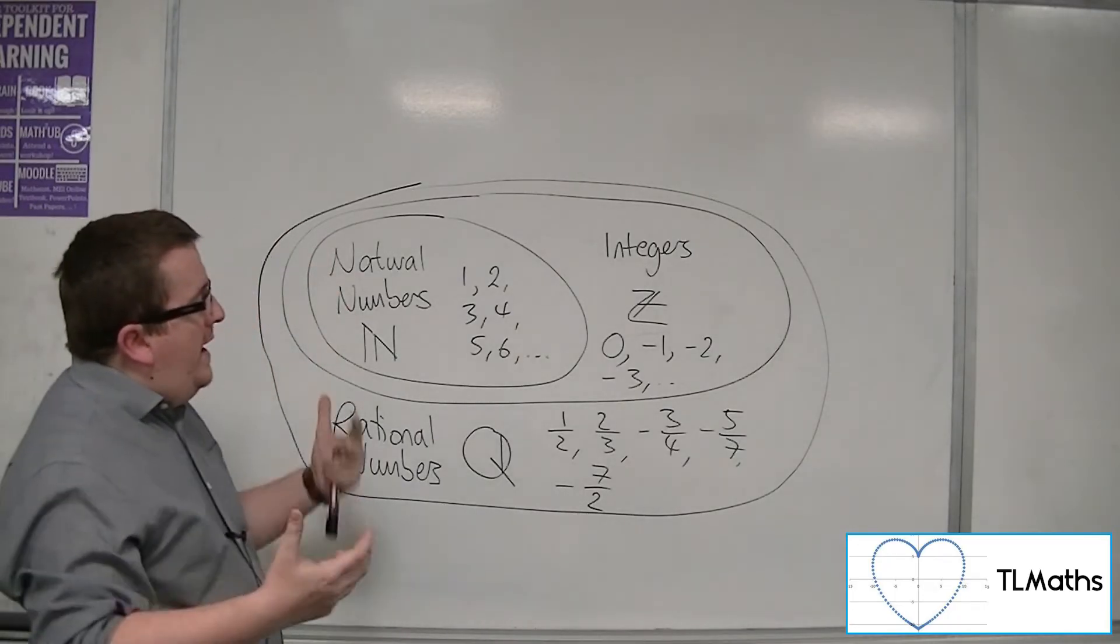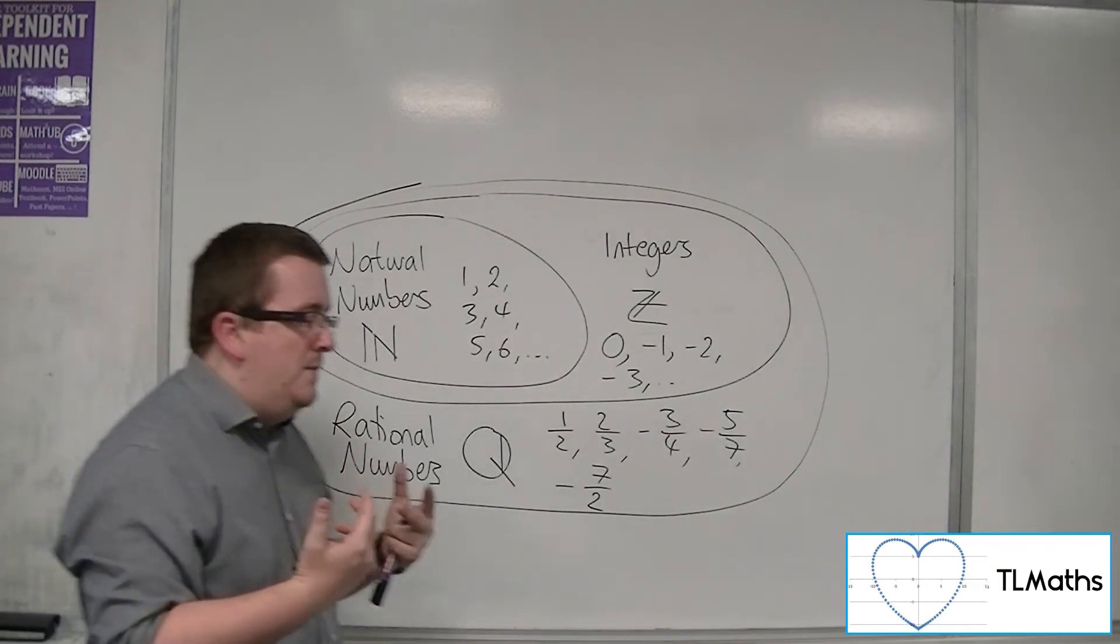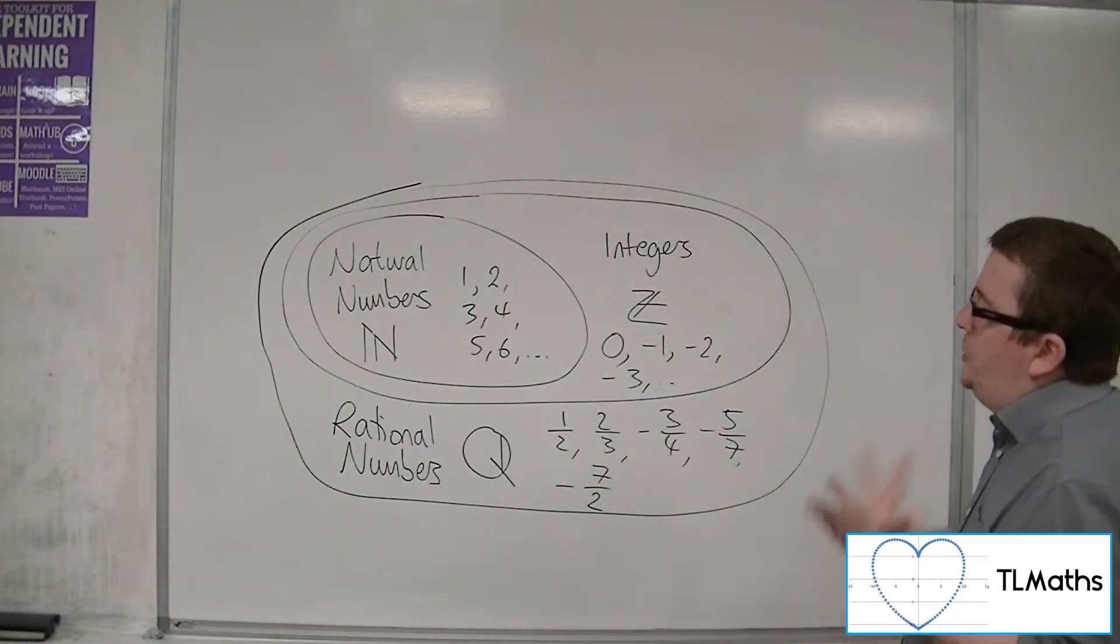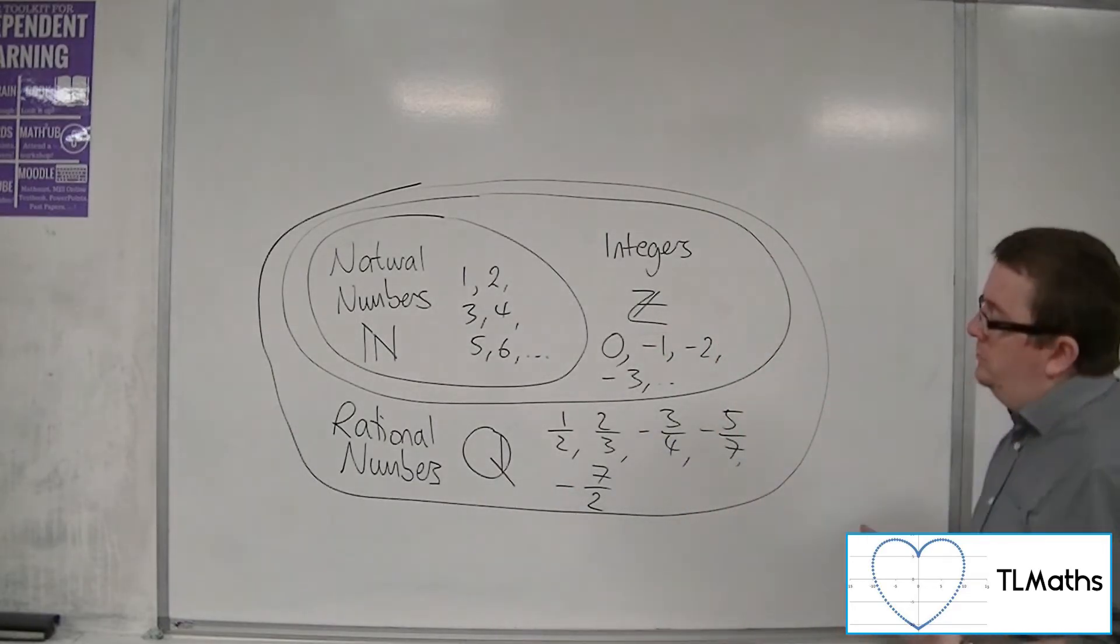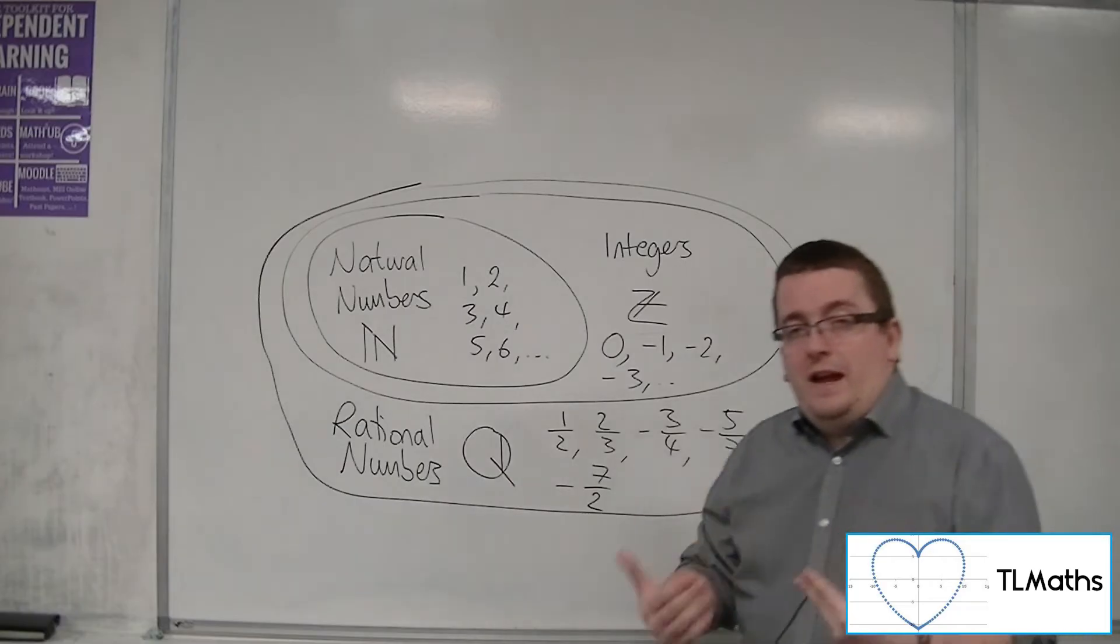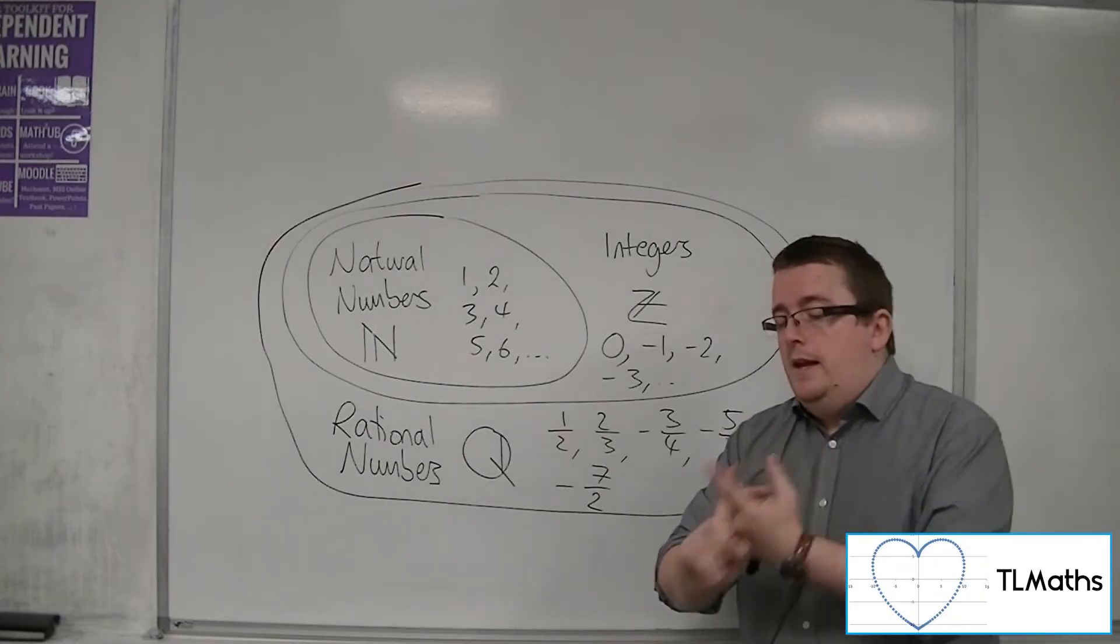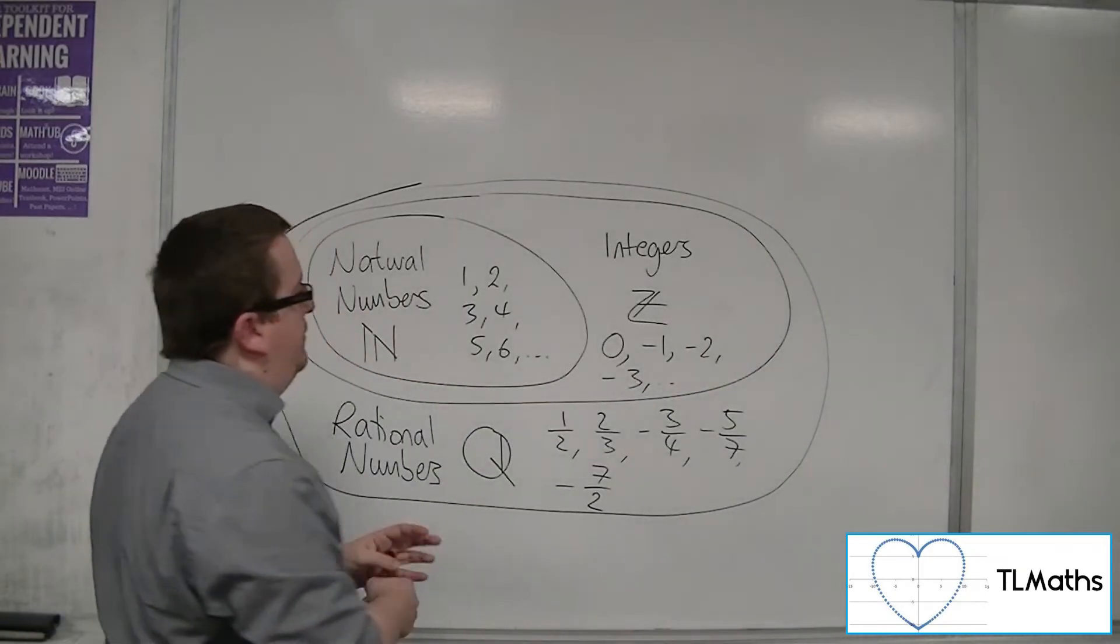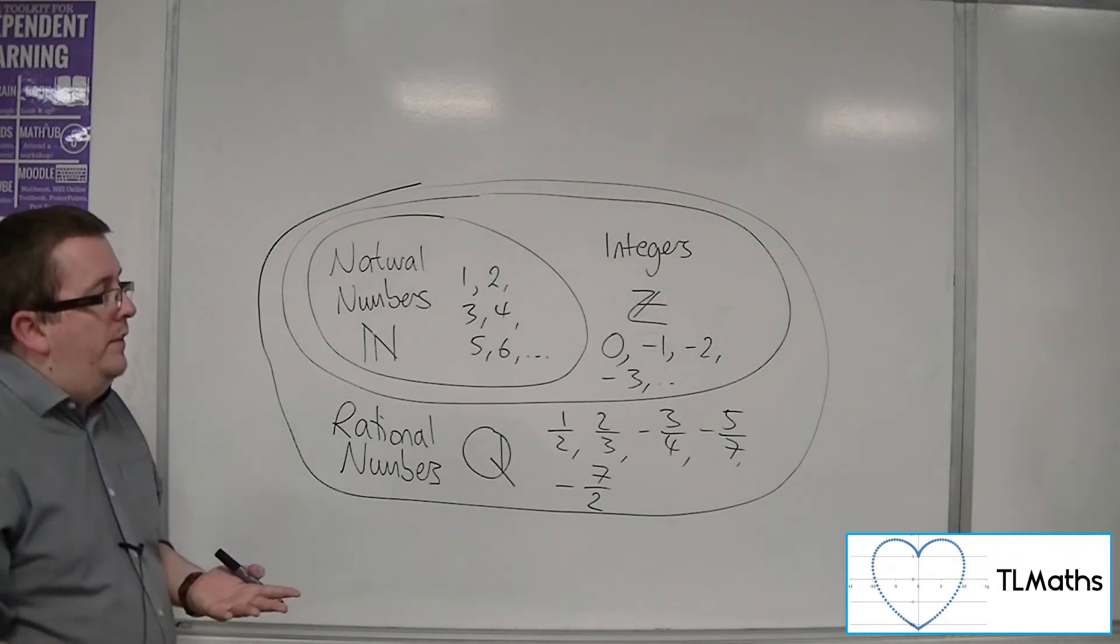So then you get to other numbers. So you get to numbers that can't be written as fractions, that are irrational. So that means that we've got things like pi, and we've got things like e. We've got root two. We've got root three or root five.